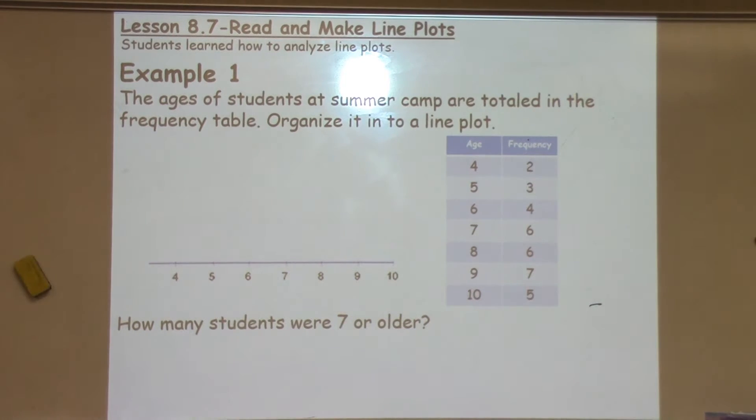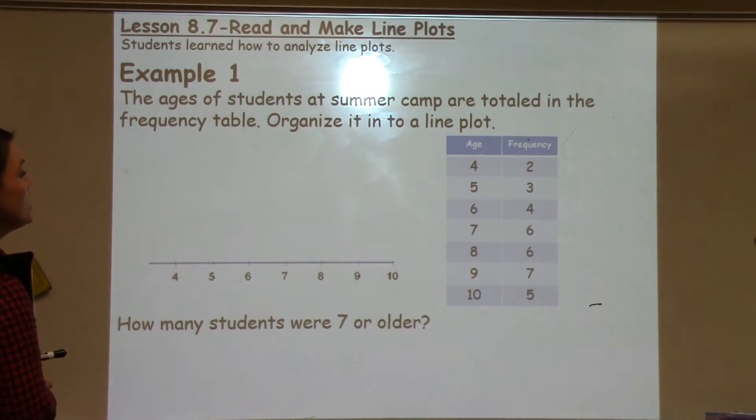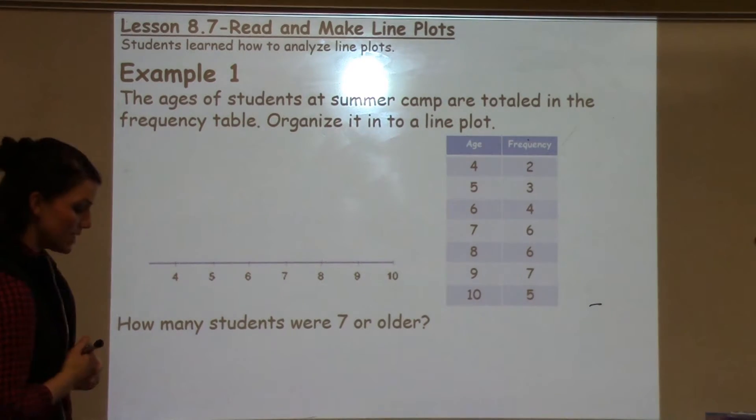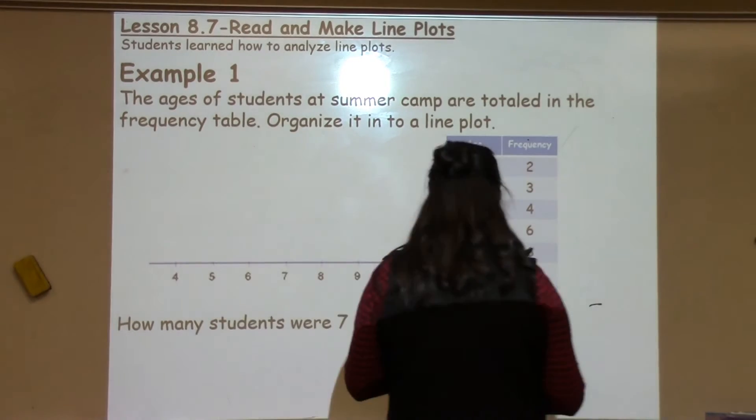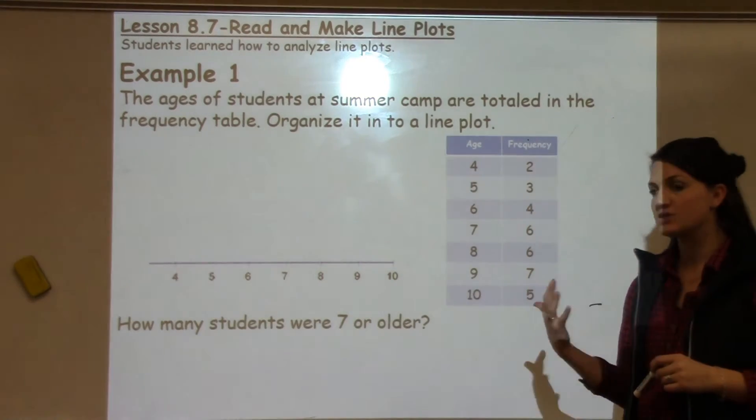So let's take a look at our example. It says, the ages of students at summer camp are totaled in the frequency table. Organize it into a line plot. So here I want to first take some time just to look at my table and make sure I understand what I'm working with.